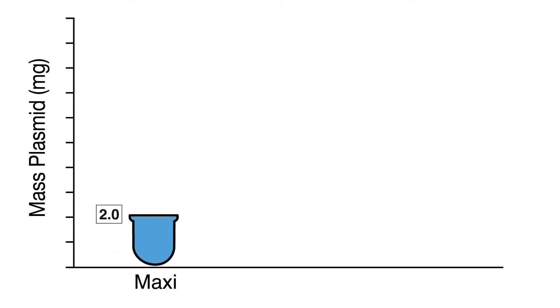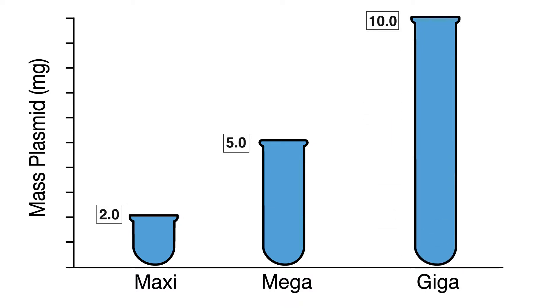Up to 2 mg of plasmid for MaxiPrep scale, up to 5 mg plasmid for Mega, and up to 10 mg for Giga.